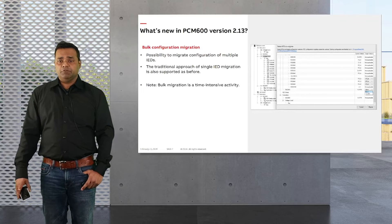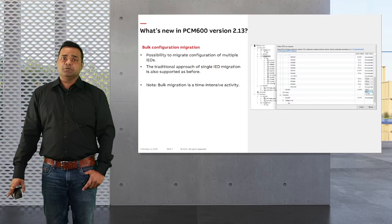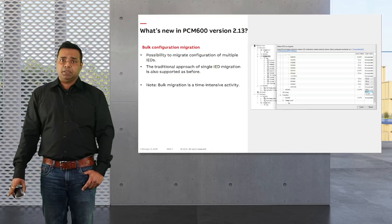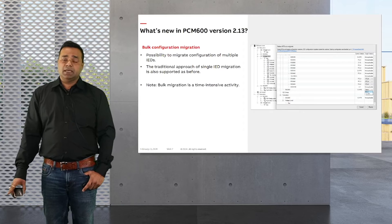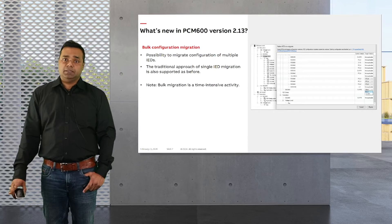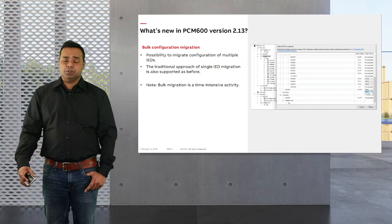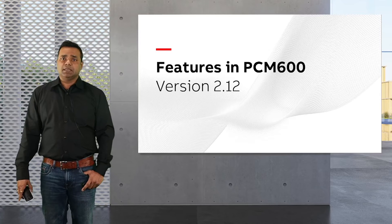Another important feature introduced with 2.13 is support for bulk configuration migration. At times there are multiple relays within a PCM 600 project whose configuration needs to be migrated. So far this could only be done per IED at a time, requiring frequent intervention. Now with bulk configuration migration, intermediate intervention is not required anymore — trigger bulk migration and PCM 600 will handle the configuration migration of all selected and supported relays. Note that this is a time-intensive process, though single IED configuration migration is still supported.